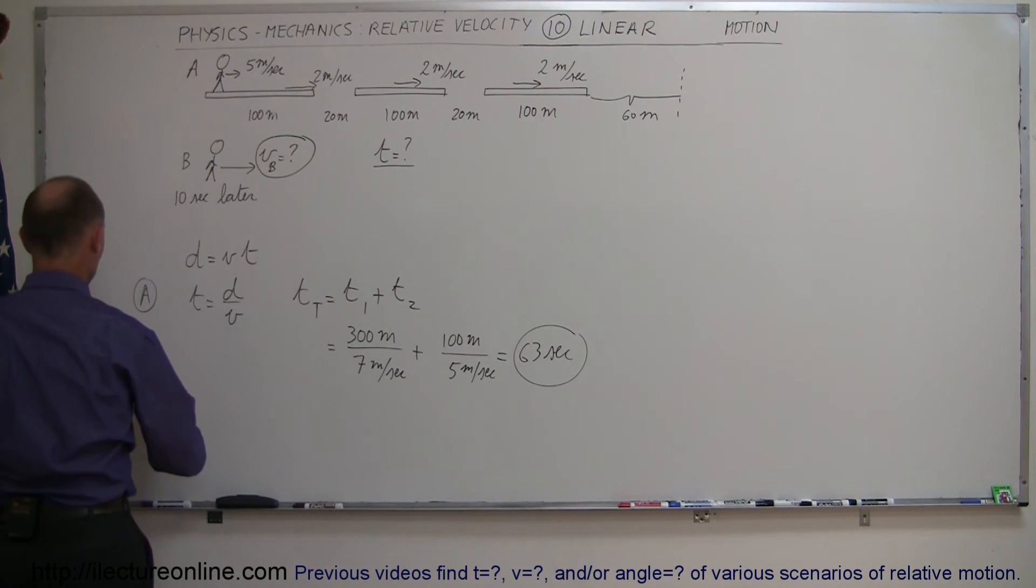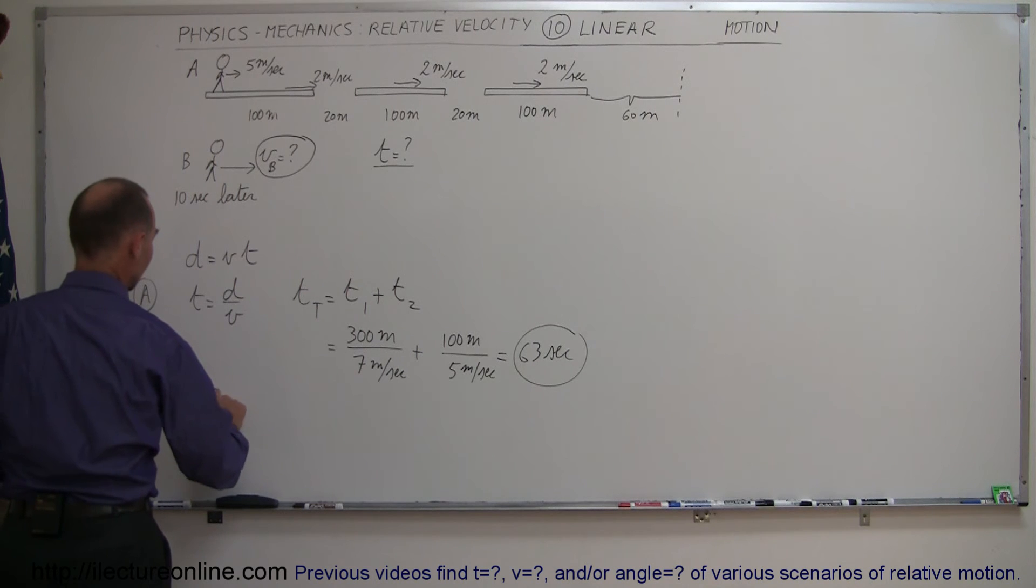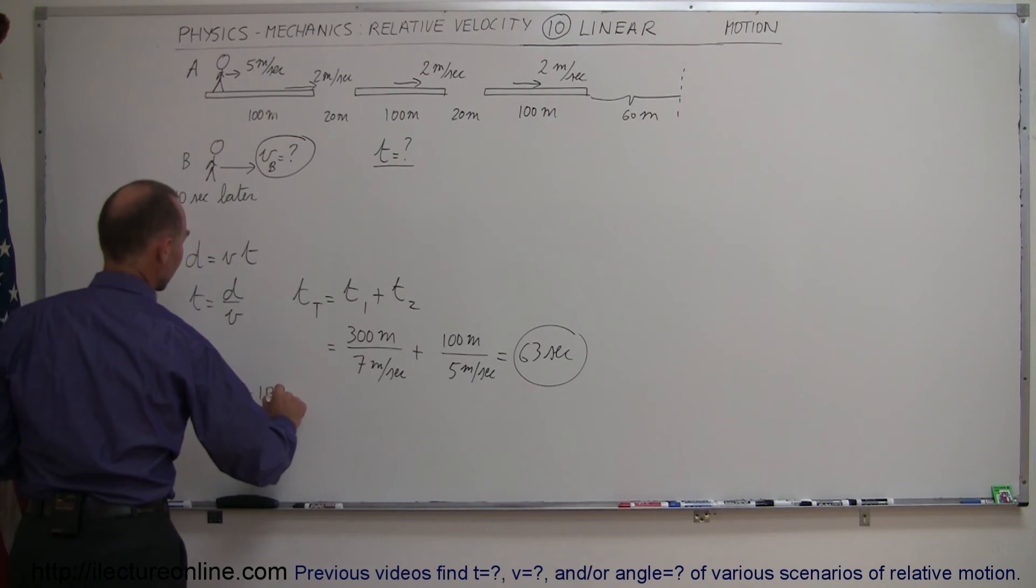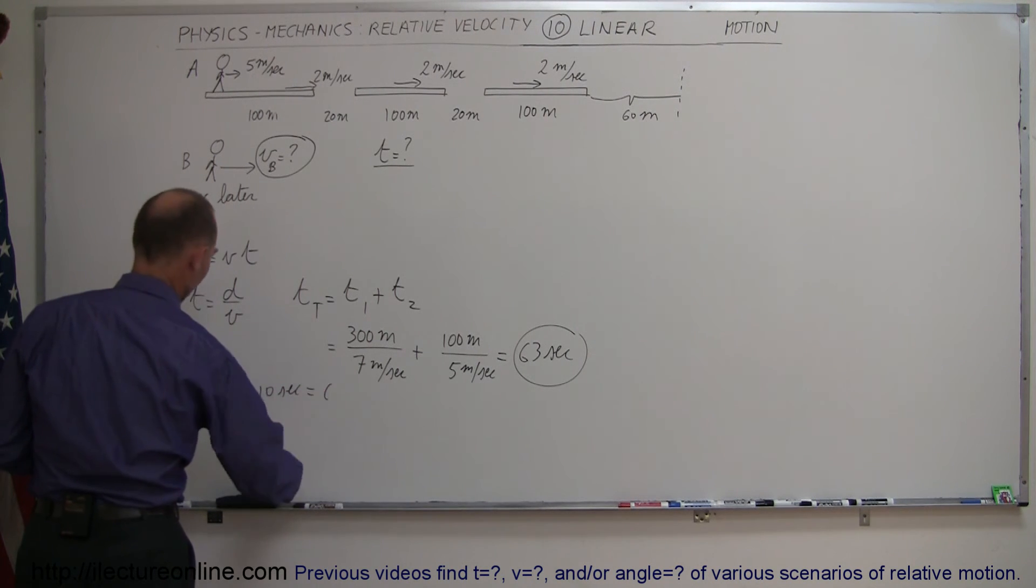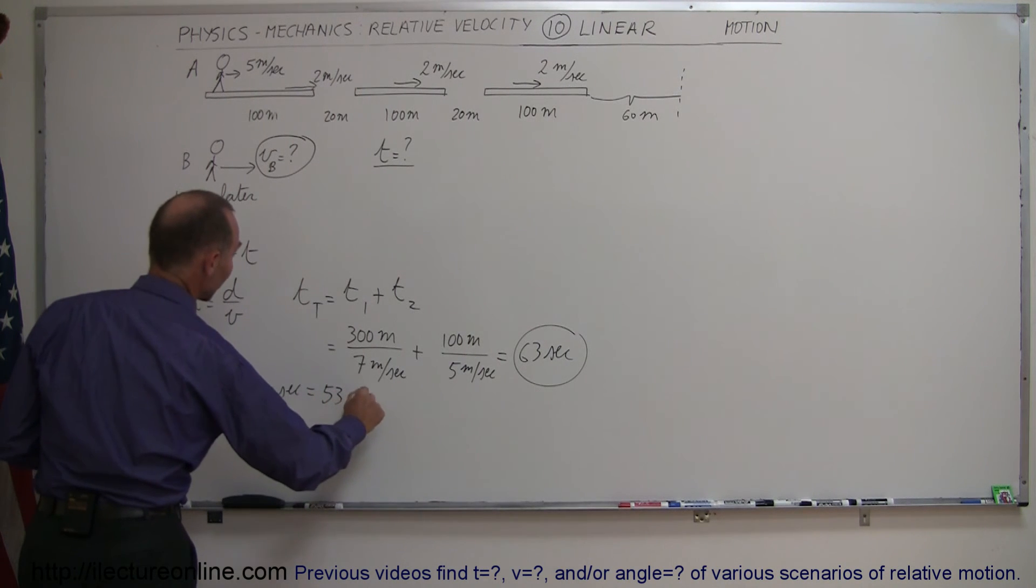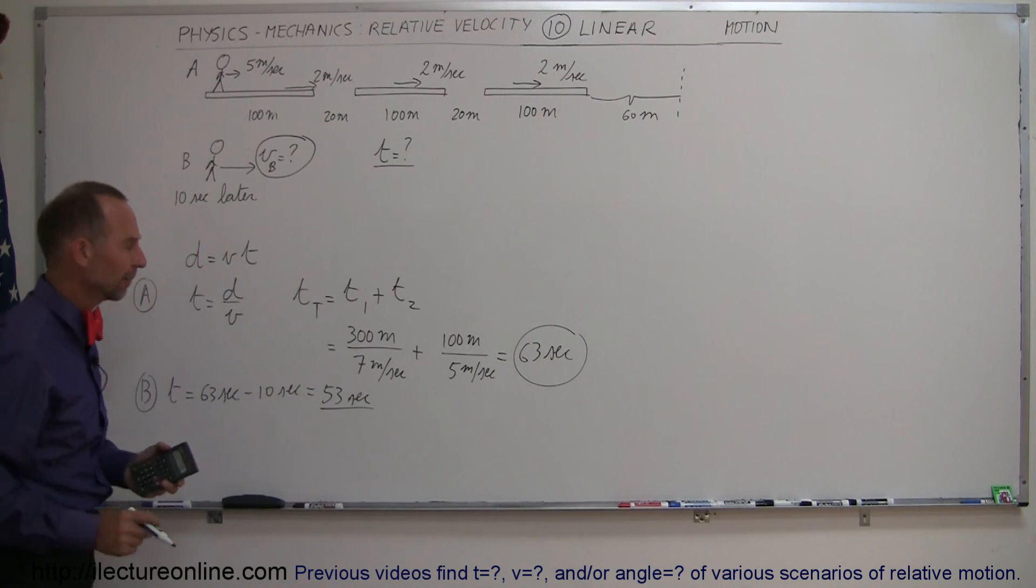All right, that means passenger B time will be equal to 63 seconds minus 10 seconds, which is not 60 but 53 seconds. So passenger B now only has 53 seconds to make it to the boarding area.